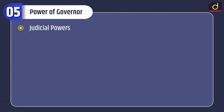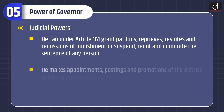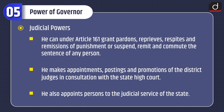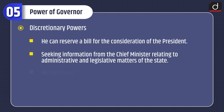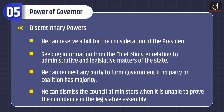Under judicial powers, he can under Article 161 grant pardons, reprieves, respites and remissions of punishment or suspend, remit and commute the sentence of any person. He makes appointments, postings and promotions of the district judges in consultation with the state high court, and he appoints persons to the judicial service of the state. Discretionary powers include: he can reserve a bill for the consideration of the president, seek information from the chief minister relating to administrative and legislative matters, request any party to form government if no party has majority, and dismiss the council of ministers when it cannot prove confidence in the legislative assembly.